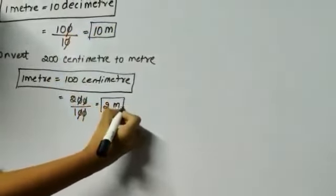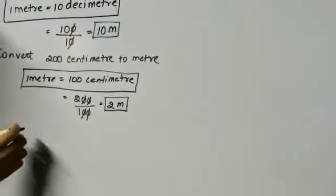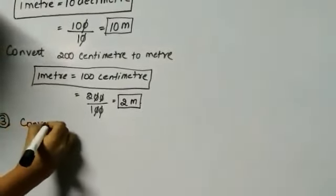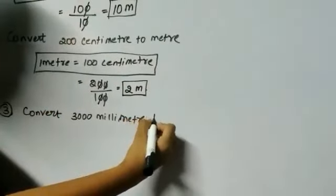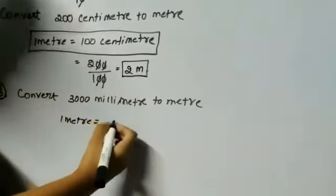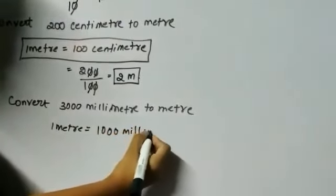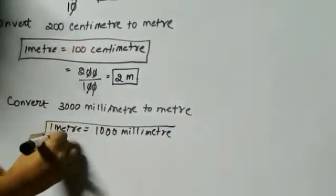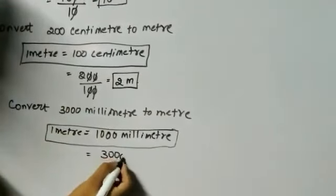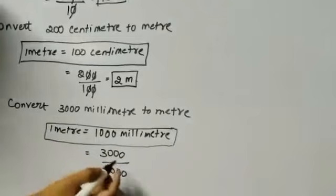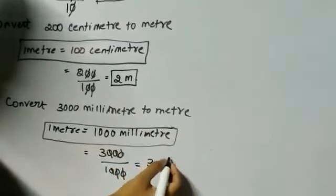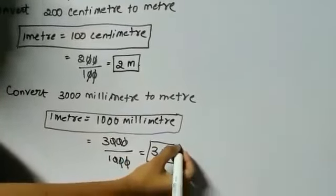This is the answer for conversion of centimeters to meters. The third sum: convert 3000 millimeters to meters. We know that 1 meter equals 1000 millimeters. You divide 3000 by 1000 and cancel the zeros to get 3 meters. This is the answer for conversion of millimeters to meters.